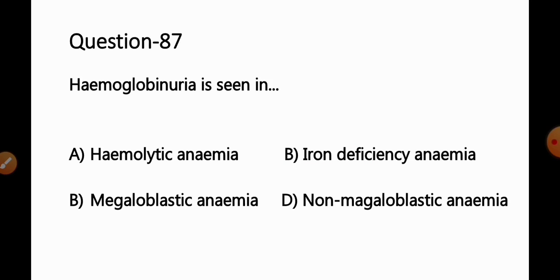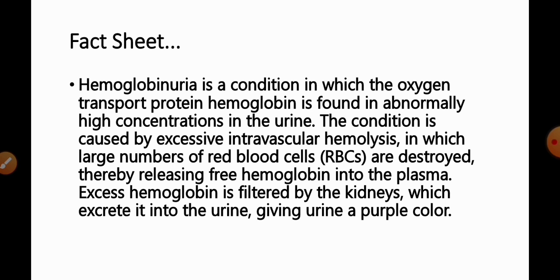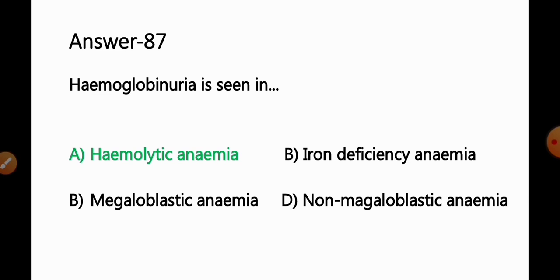Question No. 87: Hemoglobinuria is seen in — Option A: Hemolytic anemia; B: Iron deficiency anemia; C: Megaloblastic anemia; D: Non-megaloblastic anemia. Hemoglobinuria is a condition in which hemoglobin is found in abnormally high concentration in the urine, caused by excessive intravascular hemolysis, where large numbers of red blood cells are destroyed, releasing free hemoglobin into the plasma. Excess hemoglobin is filtered by the kidneys, giving urine a purple color. So Option A — hemolytic anemia — is the correct answer.